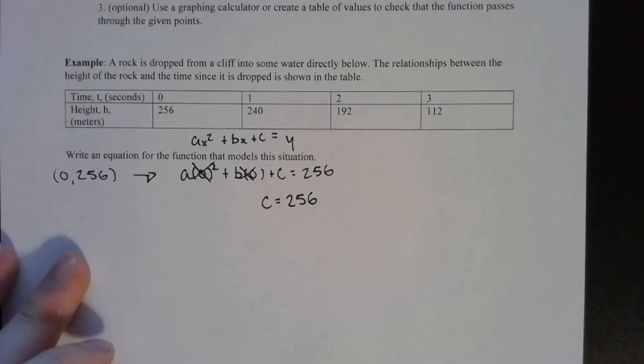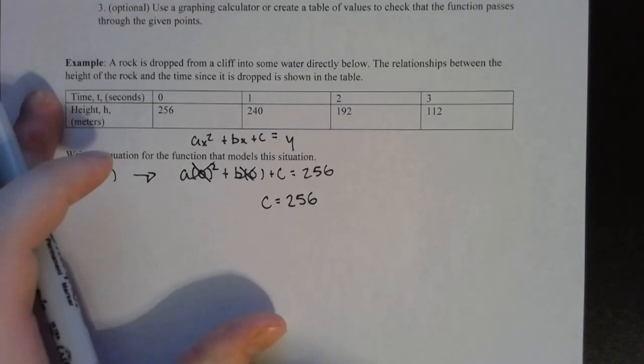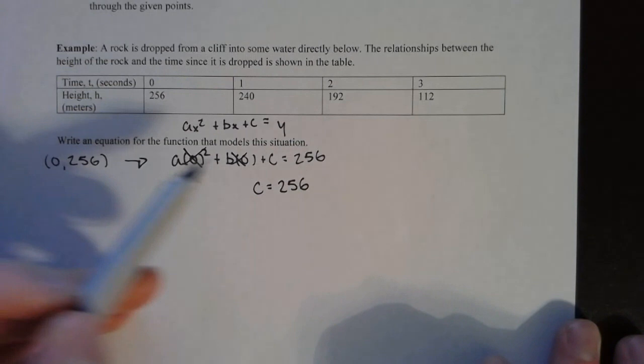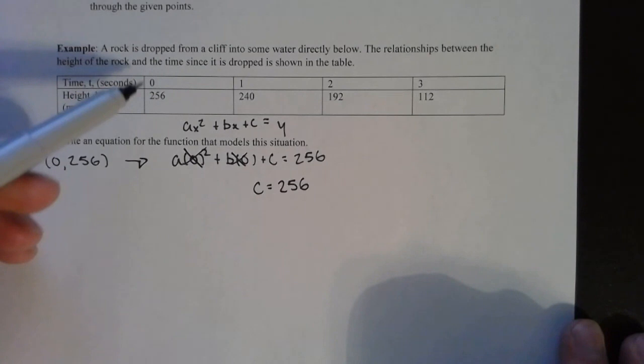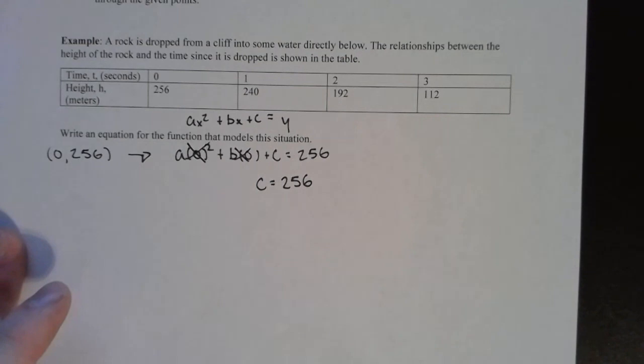So that is always going to happen when you plug in zero. Whatever this value is, that is going to be your c value. That is your y-intercept. There's a couple of different ways to think about it here. So that one is basically given to you in the table. You can plug in zero and figure out what c is. You don't necessarily have to if you're able to recognize just from this coordinate that this 256 is going to be c. So now we know what c is. Now we need to find out what a and b is.